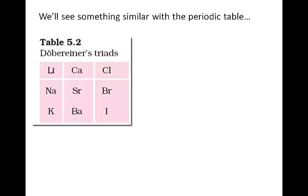First is Döbereiner's classification of elements into sets of three, called triads. He classified these by similar chemical properties, like atomic mass or density, with the middle atom being the average of the first and the last element.